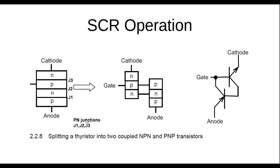The different PN junctions are numbered: junction three, junction two, and junction one. To really understand how this works, what people normally do is split it and think of it as a combination of two BJTs — the first one is an NPN BJT, then the next one is a PNP BJT. It's four layers, but you can think of it as a device that works like two coupled transistors. The control is at the gate.